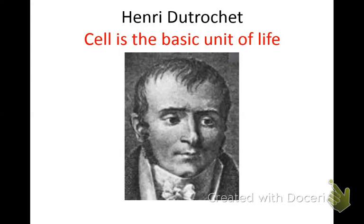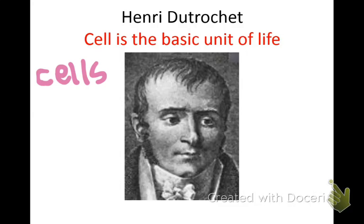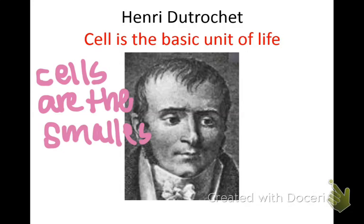The first thing on the outline is the cell theory, and there are three steps to the cell theory. The first one: cells are considered to be the basic unit of life. Go ahead and number that one because you want to know that's number one of the cell theory. All that means is that cells are the smallest thing that are considered to be alive — cells are the smallest living thing.